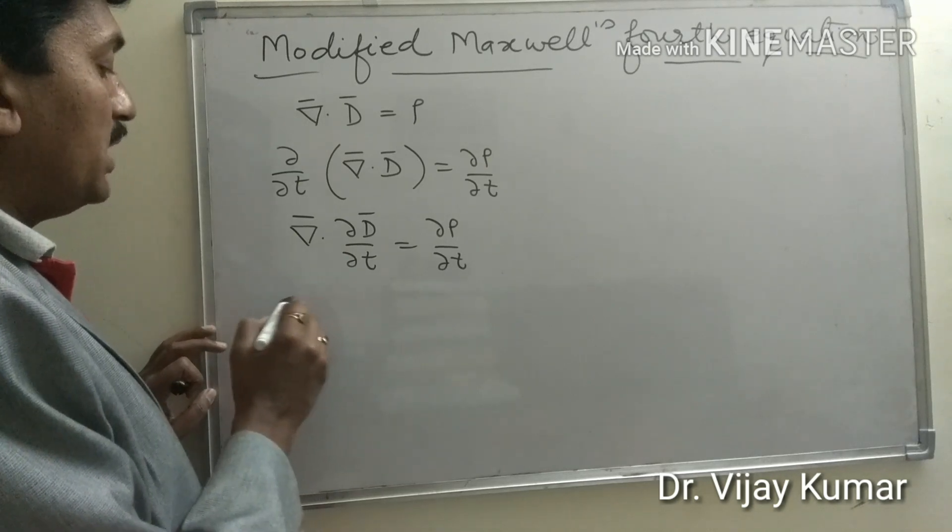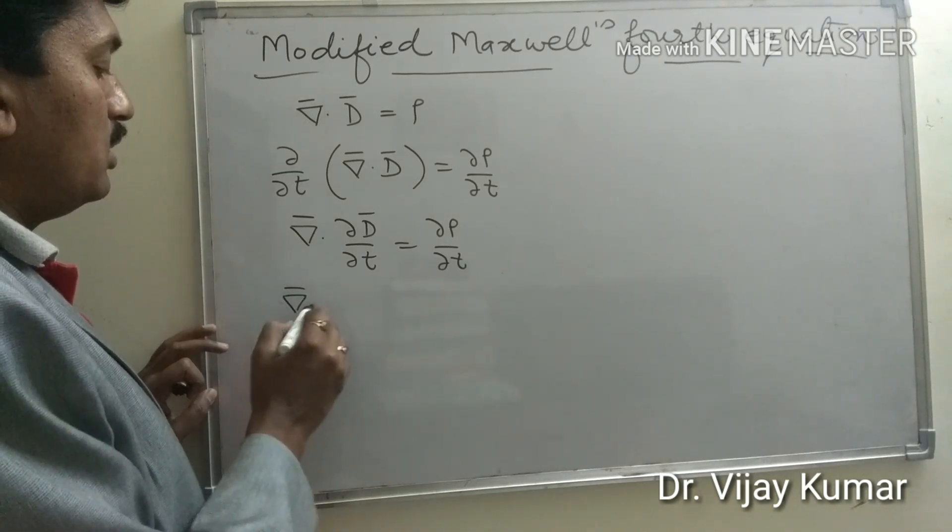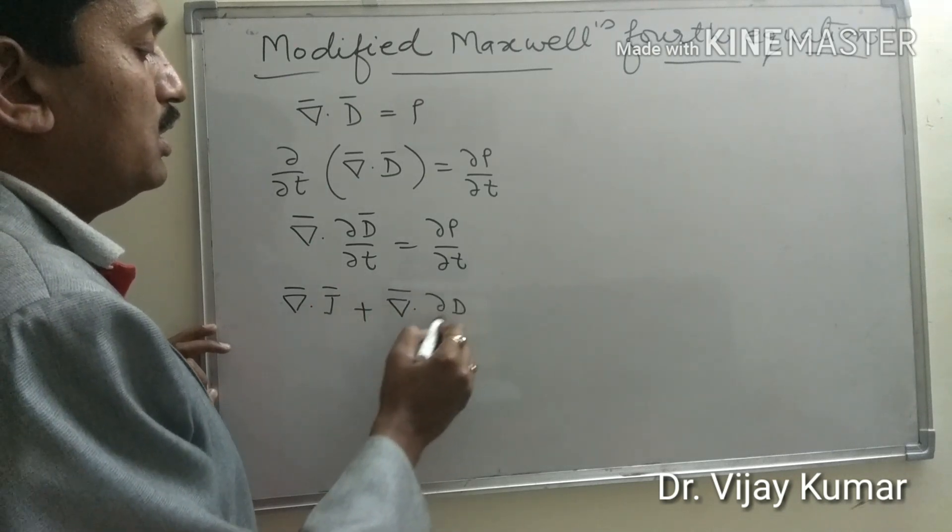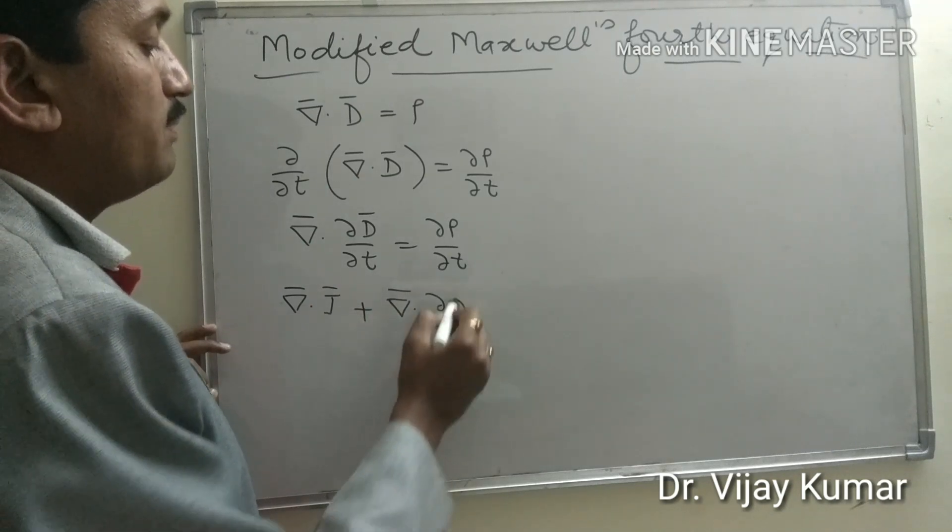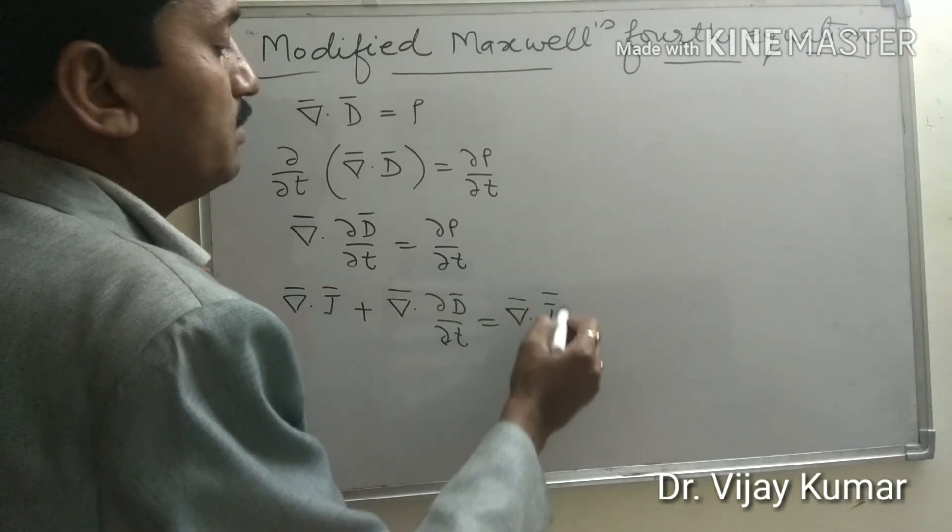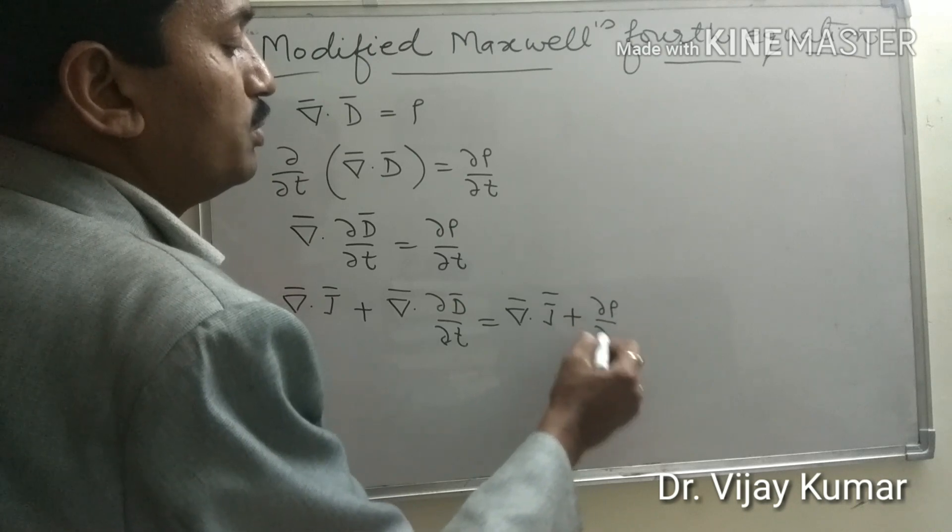current density on both sides. Del dot J plus del dot del D upon del t equal to del dot J plus del rho upon del t.